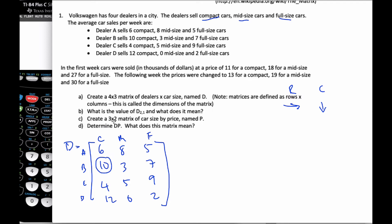Then part C says create a 3 by 2 matrix of the car size by price named P. I'm going to want a 3 by 2. So 3 rows and 2 columns. I know it's 11 compact, 18, and 27. And this is the price for week number 1. And then for week 2 I have 13, 19, and 30. So it's just a matter of paying attention to ordering, putting these in the right position. So that is P, our price matrix.